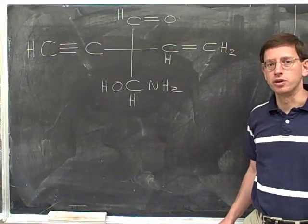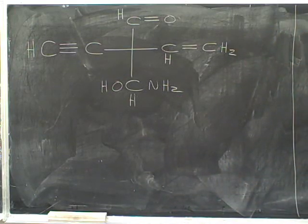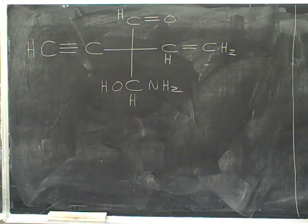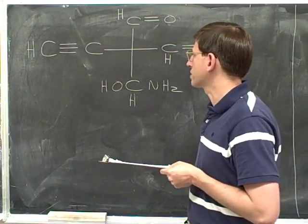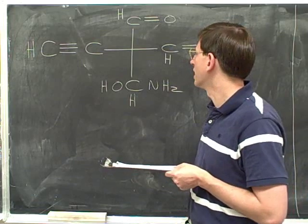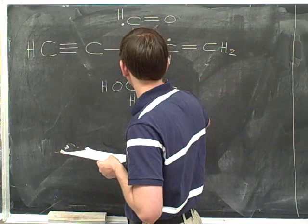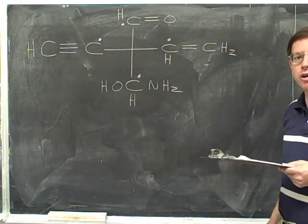Now try to assign the priorities for the substituents around this stereocenter. We'll start by putting in our dots to show the initial atoms we're comparing — the four atoms directly connected to the stereocenter. But those are all carbons, so we have a four-way tie.